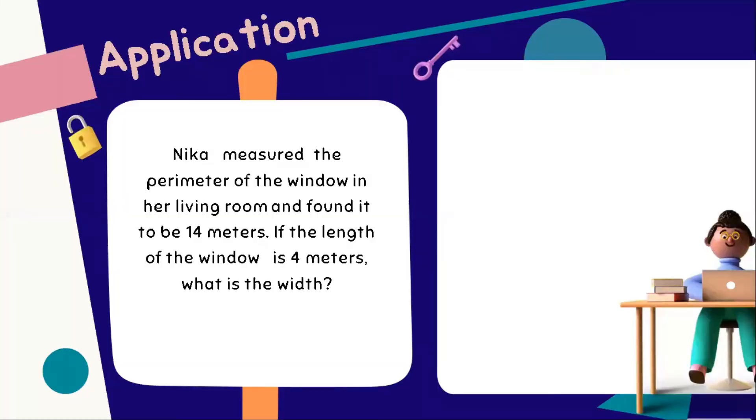Moving forward, let us now apply the concept and the skills that we just learned to this following word problems, starting with the first one. Nika measured the perimeter of the window in her living room and found it to be 14 meters. If the length of the window is 4 meters, what is the width?